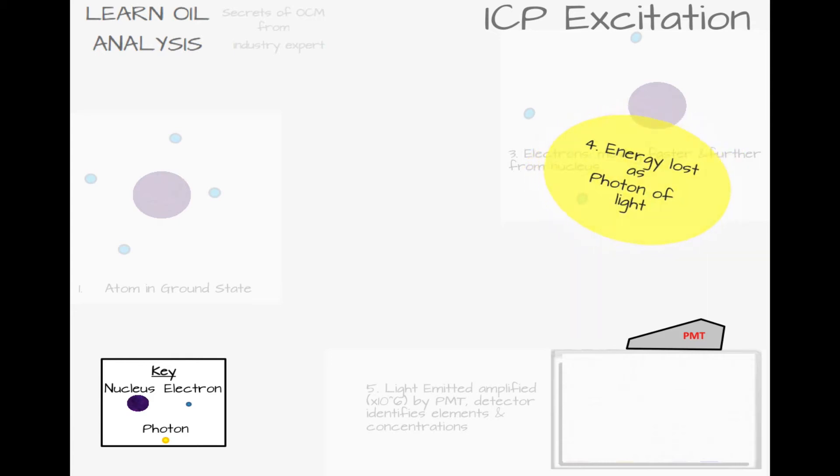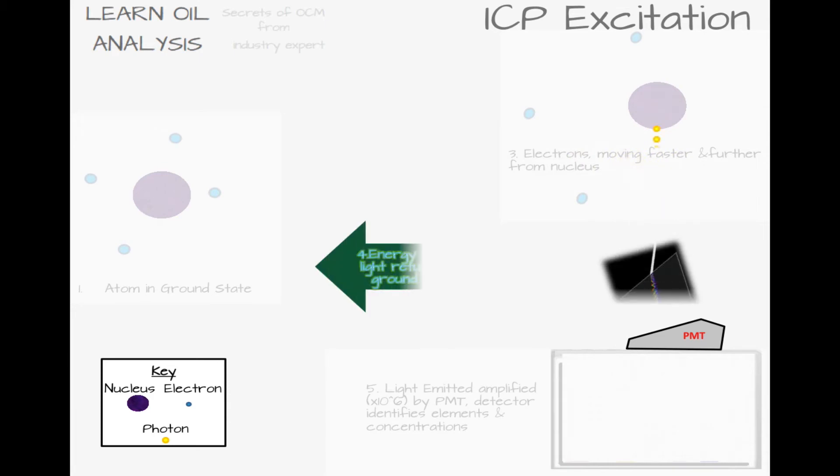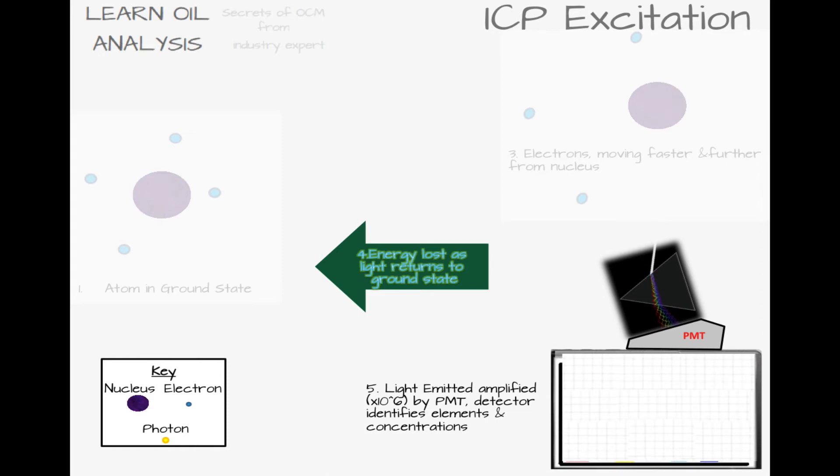The atom is now returning to the ground state and its photon, combined with the other atom photons, coloured yellow, go through a diffraction grating, similar to a prism, to split the light into their individual wavelengths. These photons reach a photomultiplier tube, or PMT, which enhances the signal up to a million-fold as an electrical signal, so it can be detected.